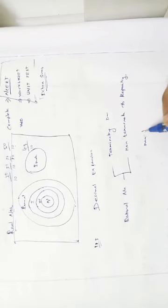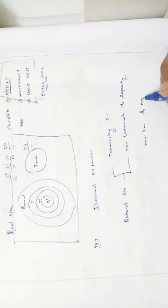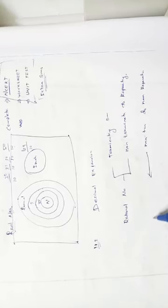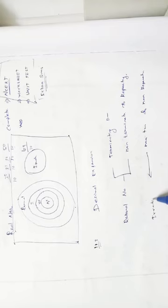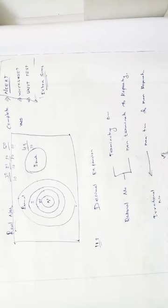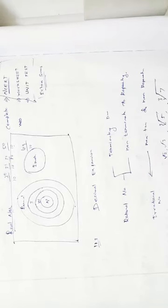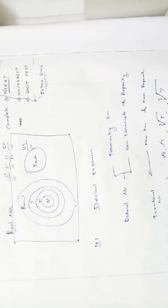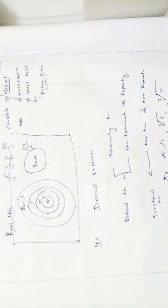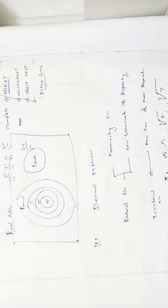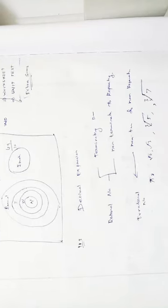If the decimal expansion is non-terminating and non-repeating, then it is an irrational number. Square root of 2, square root of 3, cube root of 5, cube root of 7 — these are all irrational numbers. Pi value is also an example of an irrational number.